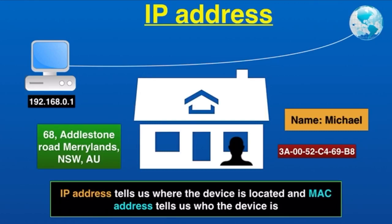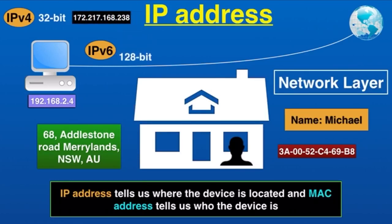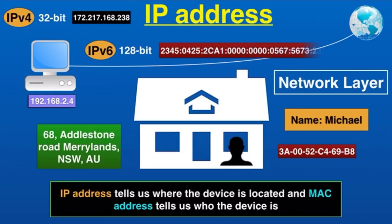So an IP address tells us where the device is located, and a MAC address tells us who the device is. IP addresses are provided by ISPs — they are not permanent and keep changing every time you connect to a network, as they are dynamically allocated. IP address works on the network layer of the OSI model. There are two versions of IP addresses: IPv4 and IPv6. IPv4 is a 32-bit address, whereas IPv6 is a 128-bit address.